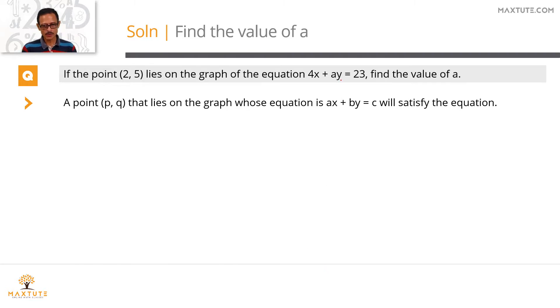Essentially meaning that any point that lies on this line 4x plus ay equals 23, if you pick the coordinates of that point and substitute it in x and y of this equation, it will satisfy this equation.